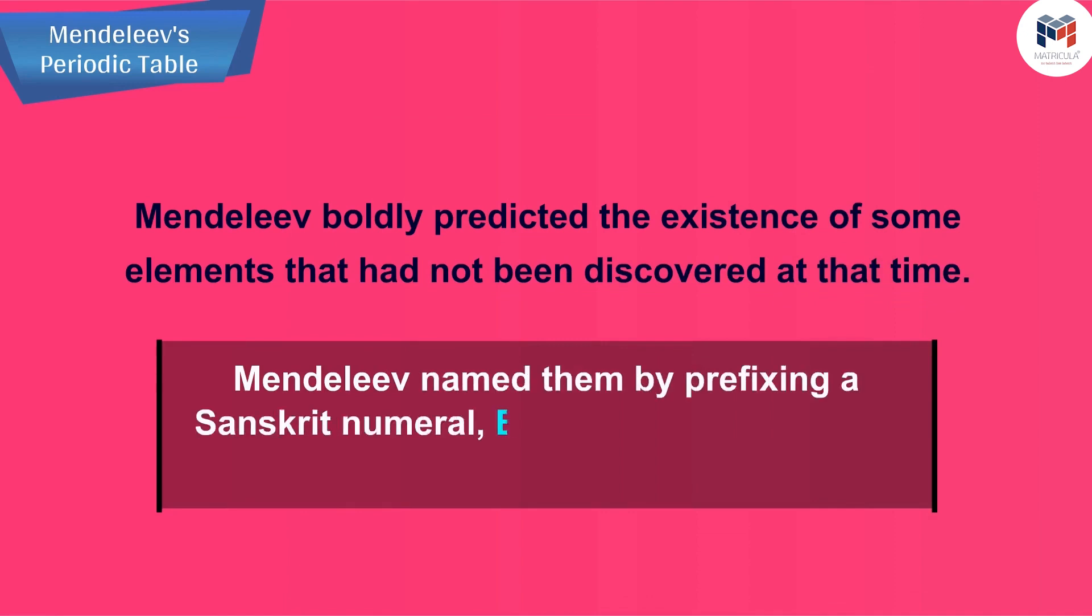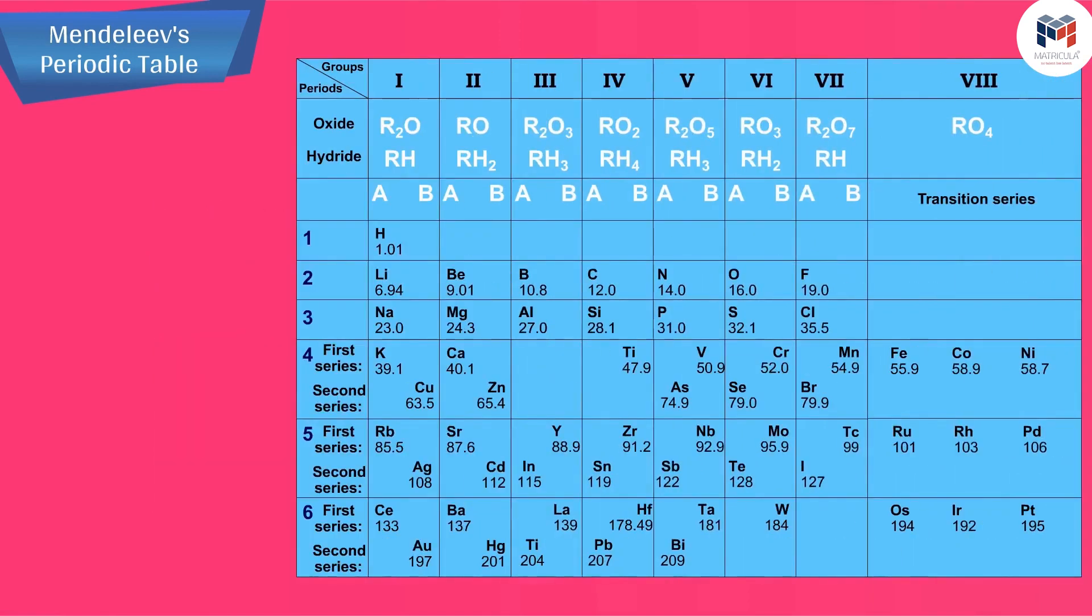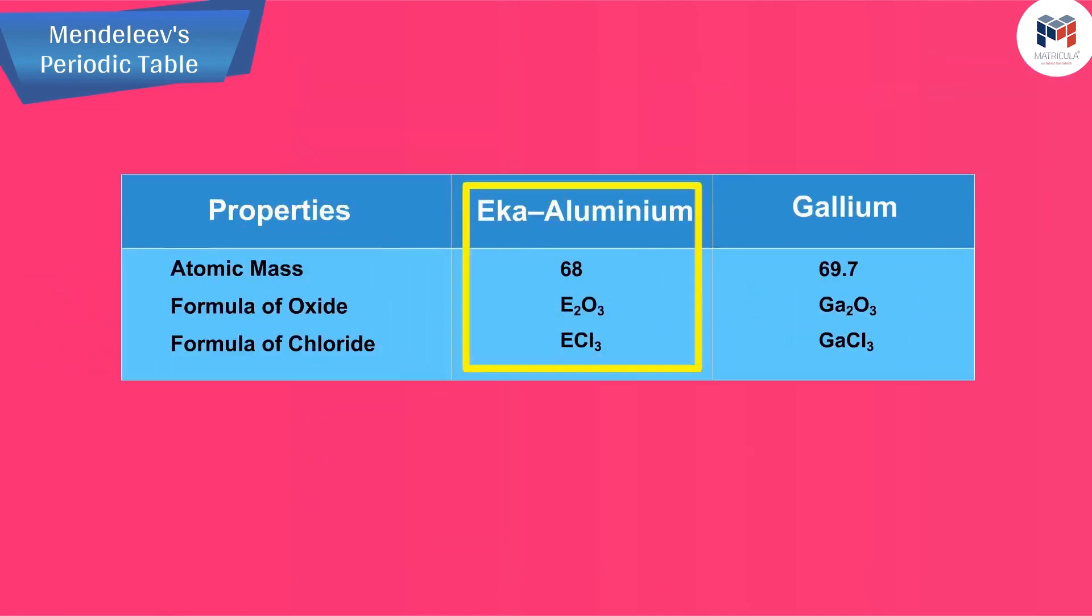Mendeleev named them by prefixing a Sanskrit numeral eka (one) to the name of preceding element in the same group. For instance, scandium, gallium, and germanium discovered later have properties similar to eka-boron, eka-aluminium, and eka-silicon respectively. The properties of eka-aluminium predicted by Mendeleev and those of the element gallium which was discovered later and replaced eka-aluminium.